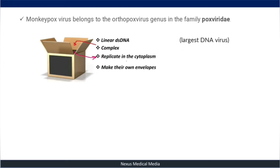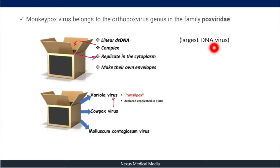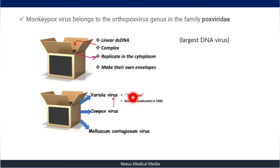Poxviruses are the largest DNA viruses. In the Poxviridae family, three viruses were previously discussed: variola virus, which causes smallpox and has been declared eradicated since 1980; cowpox virus; and molluscum contagiosum. The smallpox vaccine was derived from the cowpox virus.